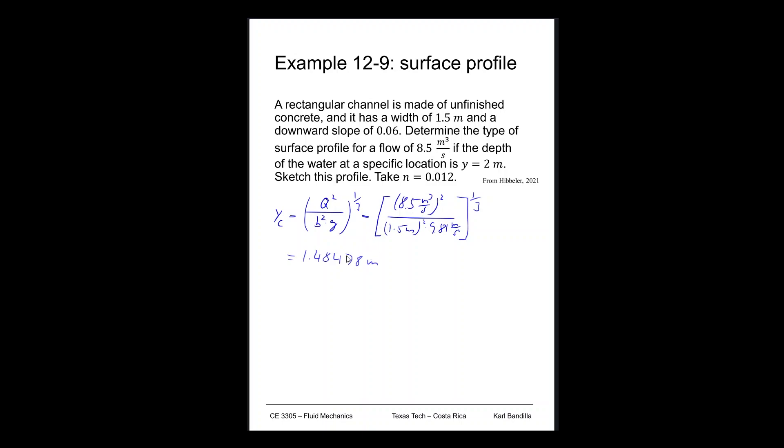So we're given y, now we have yc. Next, let's figure out what our critical slope is. So sc is n squared times g times ac divided by b_top times our rhc to the four-thirds. So let's figure all these out.